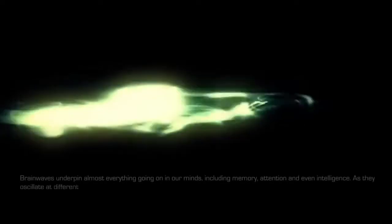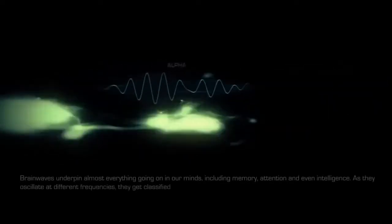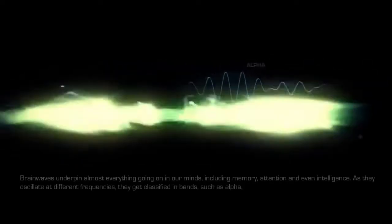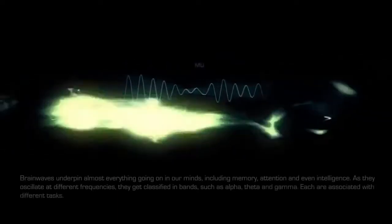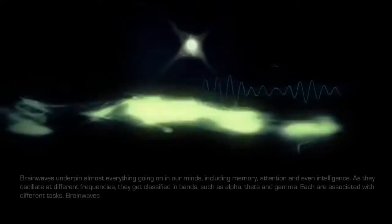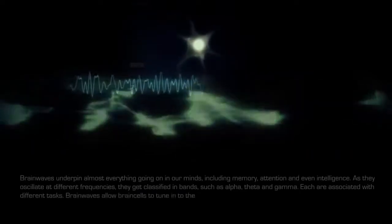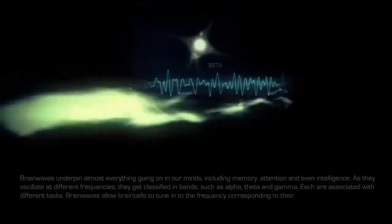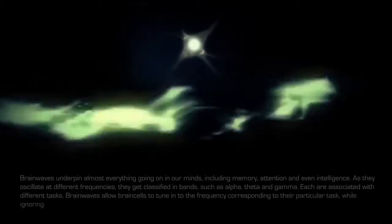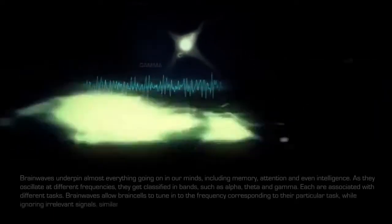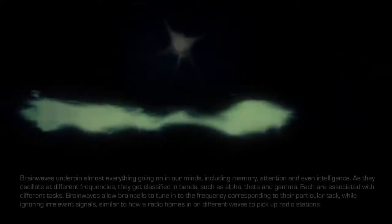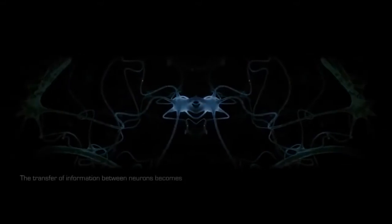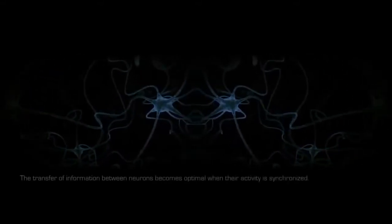As they oscillate at different frequencies, they get classified in bands such as alpha, theta, and gamma. Each are associated with different tasks. Brain waves allow brain cells to tune into the frequency corresponding to their particular task, while ignoring irrelevant signals, similar to how a radio homes in on different waves to pick up radio stations. The transfer of information between neurons becomes optimal when their activity is synchronized.